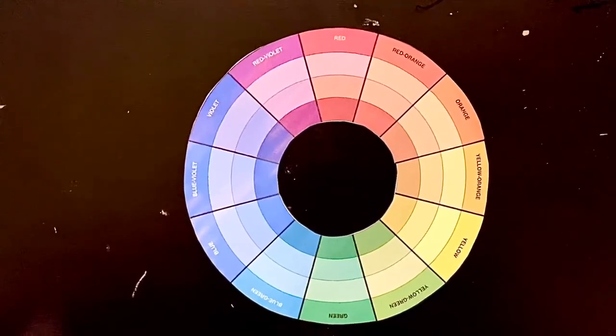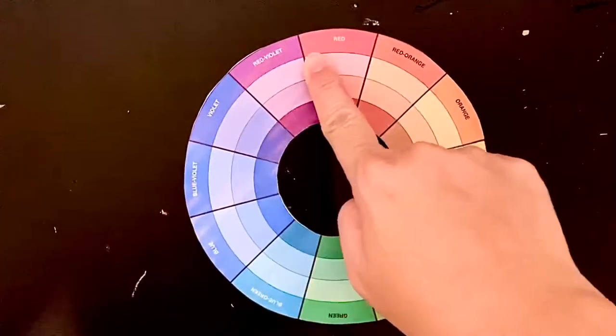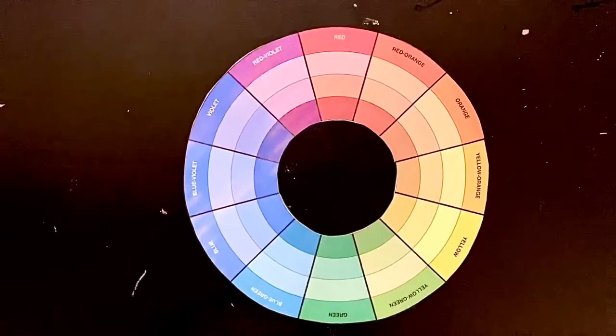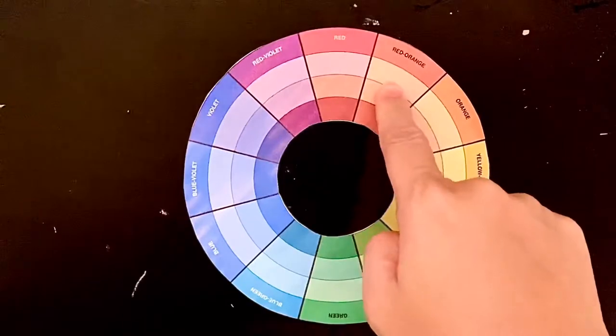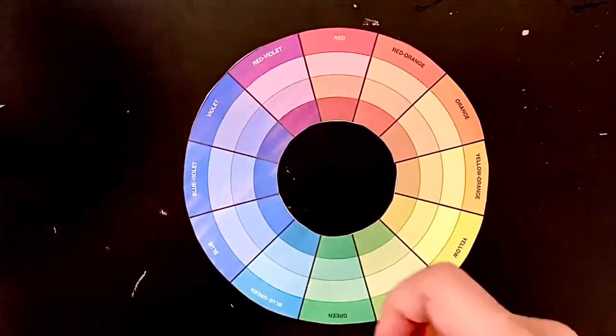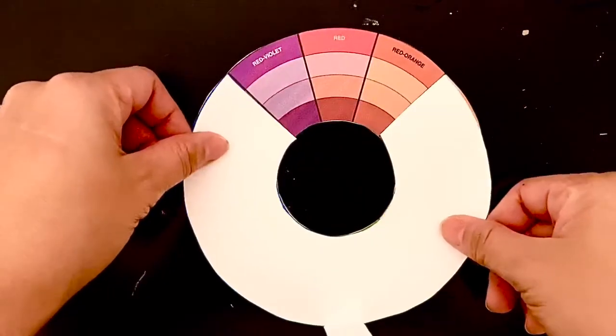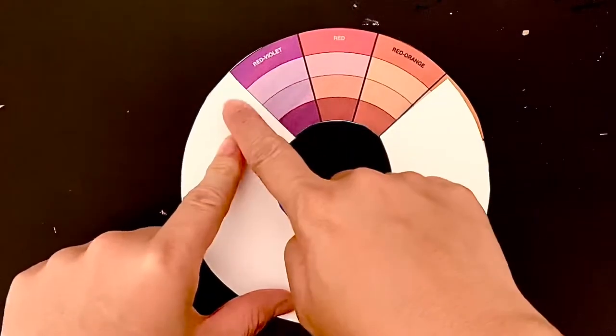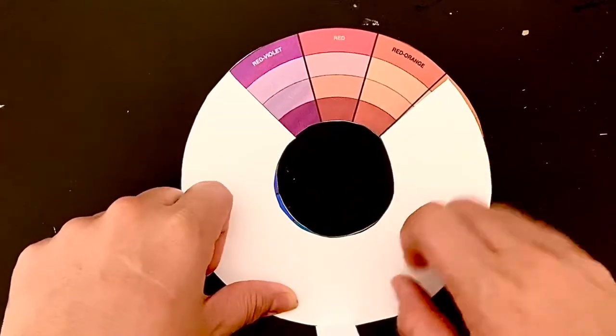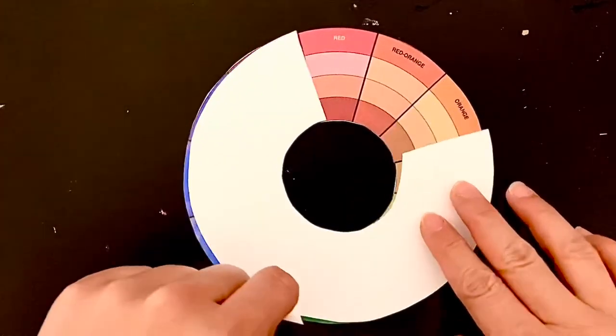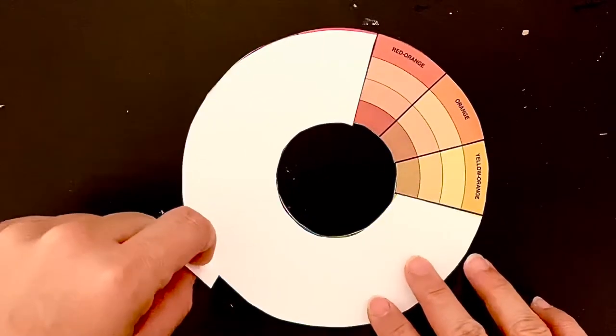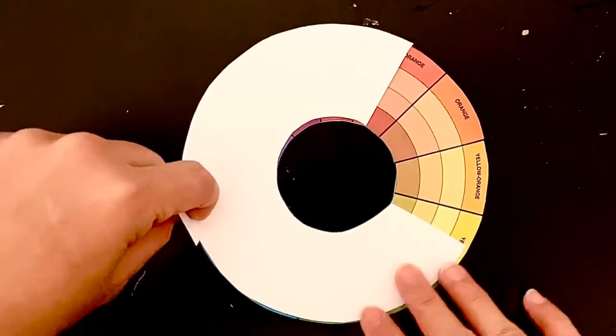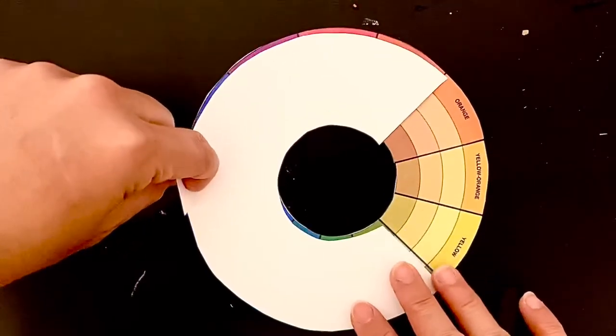Let's visit the color wheel since this project is all about analogous colors. Analogous colors are three colors that are next to each other on the color wheel. For example, red violet, red, and red orange will be a set of analogous colors. You could turn it to the right to get different sets of warm and cool analogous colors.